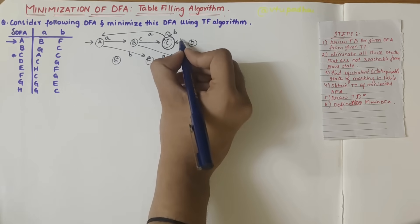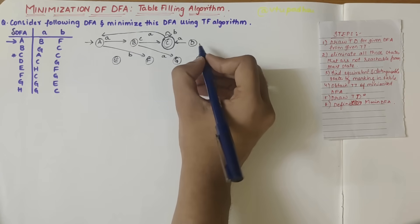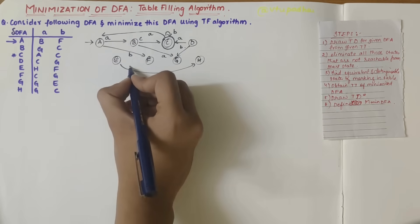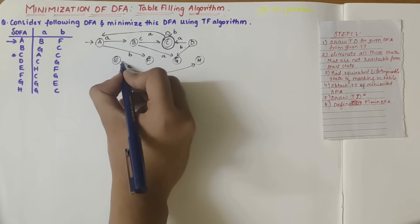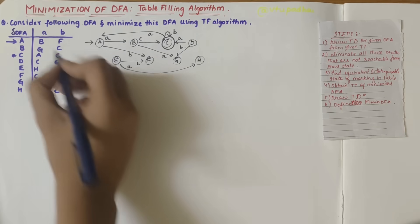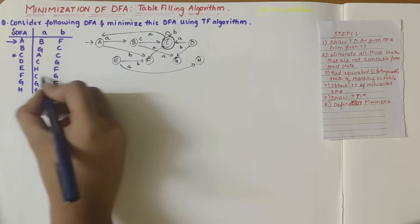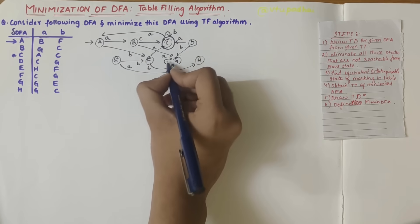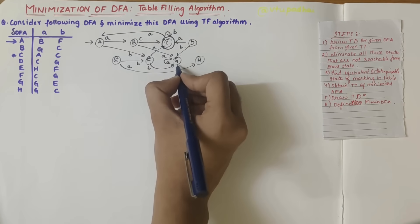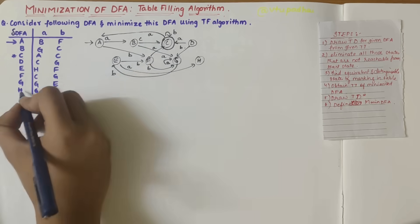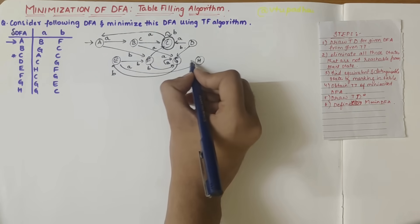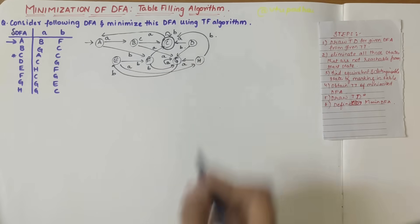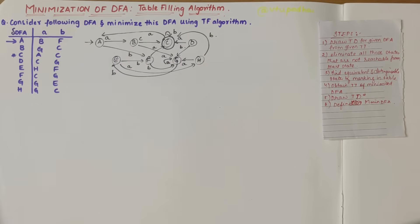Continuing the transitions: e on b gives f, f on a gives c, f on b gives g, g on a gives g itself, g on b gives e, h on a gives g, and h on b gives c. Now that we have drawn the transition diagram, we can determine which states are reachable from the initial state.